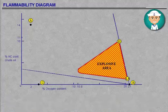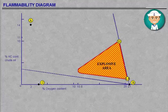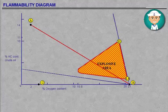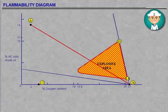If we start venting at point A with air, a line will extend from point A straight to point B through the flammable area. Avoid this at all costs.